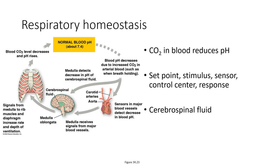Finally, let's look at respiratory homeostasis. As an organism gets more active, it generates more carbon dioxide that enters the blood, reducing blood pH because carbon dioxide reacts with water to form carbonic acid. Sensors in the major blood vessels detect the decrease in blood pH, and a sensor in the medulla of the brain detects the decrease in pH of the cerebral spinal fluid. The medulla activates a response, sending signals to the rib muscles and diaphragm to increase the rate and depth of breathing. This causes blood CO2 to decrease as it is exhaled, raising blood pH back to homeostasis. Notably, the body is not measuring oxygen for respiratory homeostasis, but is measuring carbon dioxide.